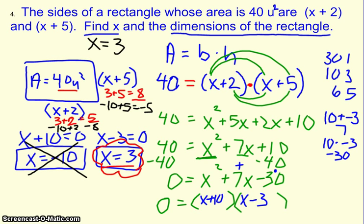Then it wants me to give the dimensions of the rectangle. Well, I've already found that, too. I took my x equals 3, and I plugged it in. 3 plus 5, and I got 8. 3 plus 2, and I got 5. So my dimensions is we have a rectangle that's 8 units by 5 units.